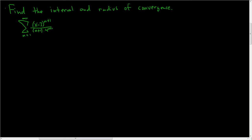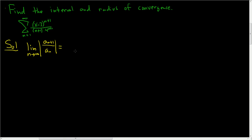We're being asked to find the interval and radius of convergence. To find the interval of convergence and the radius, we'll use the ratio test. We'll start by taking the limit as n approaches infinity of the absolute value of a sub n plus 1 divided by a sub n. We want this to be less than 1 for convergence, because that's when we get convergence via the ratio test.